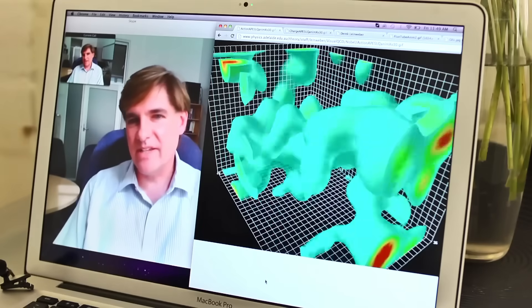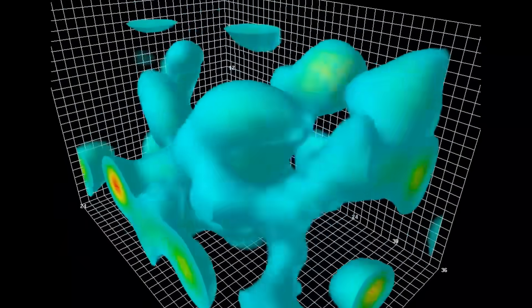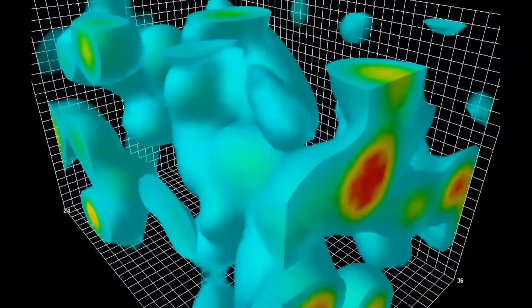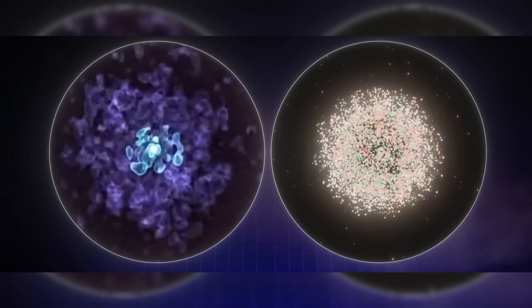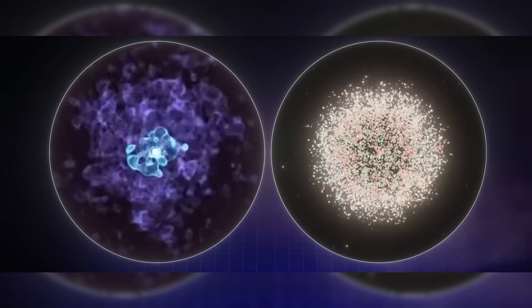One surprising link comes from quantum fluctuations, tiny, unpredictable energy shifts that occur even in empty space. Some researchers believe that axions, if they exist, may leave behind a detectable signature in these fluctuations.